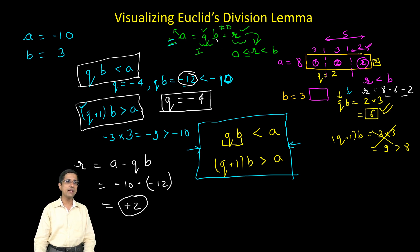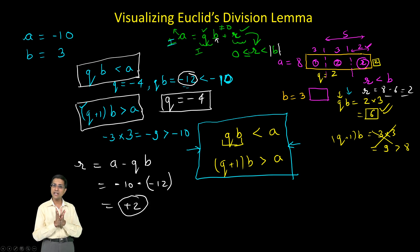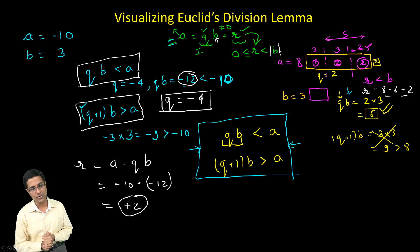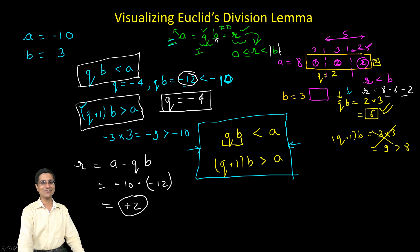Another change which we need to do if we are choosing B to be negative is that we put an absolute value sign here indicating clearly that our remainder always has to be positive. Hope this helps in visualizing division lemma. If you still have doubts don't hesitate to put them in comment section below. Thank you.